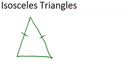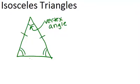There are a couple pieces of important vocabulary to know. The first is that the angle that is between the two congruent sides is called the vertex angle. The other two angles in the isosceles triangle are called base angles.